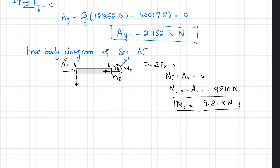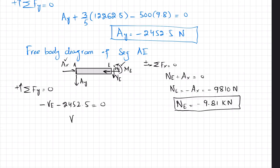Applying ΣF_y = 0 with upward positive: −V_E − A_y = 0, where A_y = 2,452.5 N downward. Solving gives V_E = −2,452.5 N, or V_E = −2.45 kN.